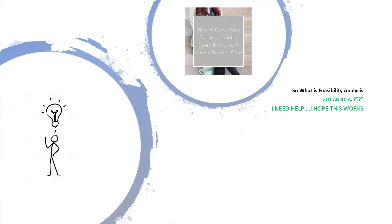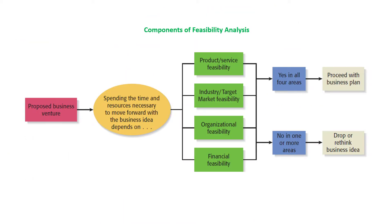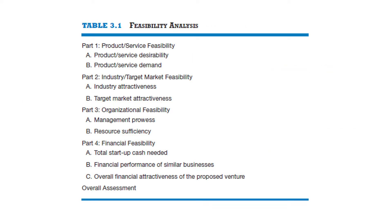This analysis should be done before you proceed with your business plan. Feasibility analysis consists of four elements, and those include product/service feasibility, industry/target feasibility, organizational feasibility, and financial feasibility.